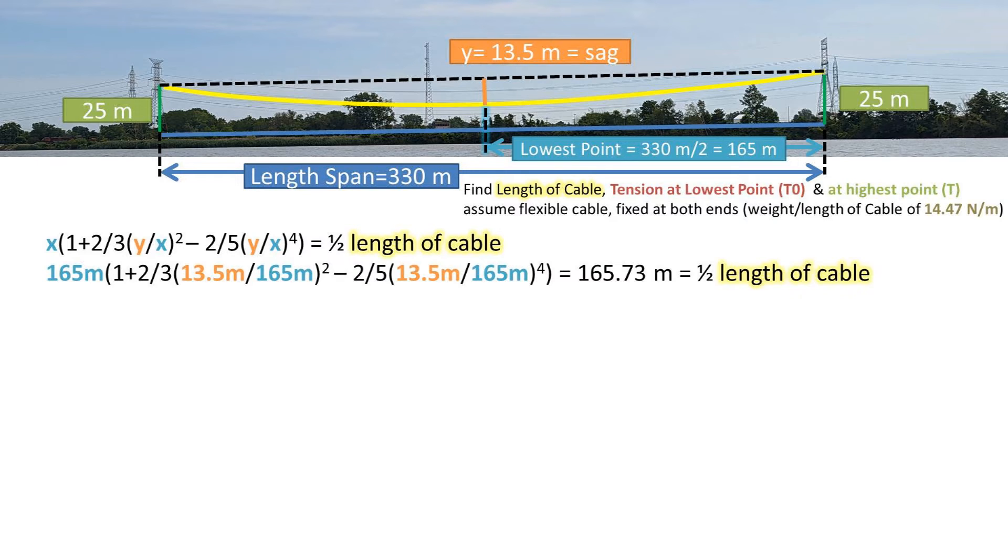Plugging in our x distance to the lowest point of 165 meters and our y or sag value of 13.5 meters into this equation, we get 165.73 meters for half of the length. Multiplying this by two, we get 331.47 meters.